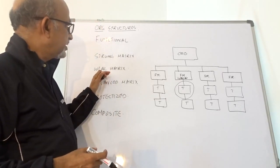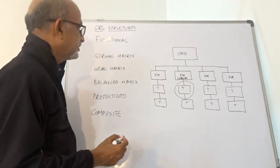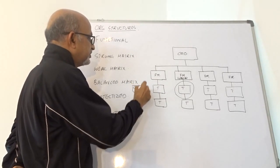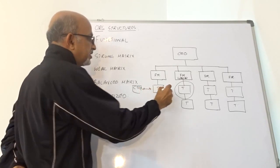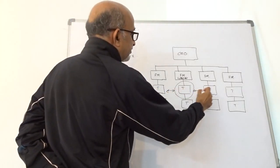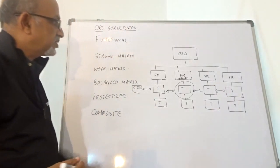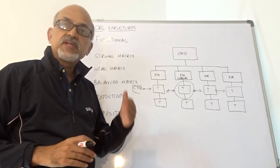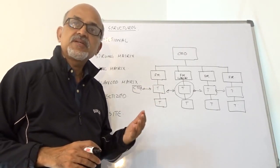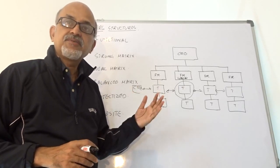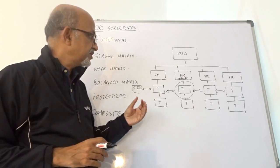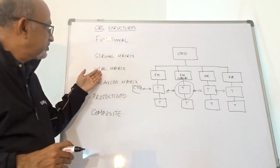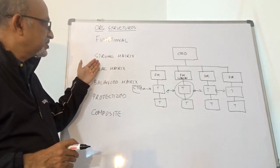In a matrix organization, let's say these are technical people — you may have a CTO, and all the architects may report to the CTO. In a matrix organization, the individual team members will have more than one boss. Whenever we hear the term dotted line reporting, it is an indication of the existence of a matrix organization. A matrix itself can take three forms: weak matrix, balanced matrix, and strong matrix.